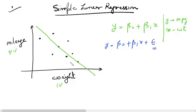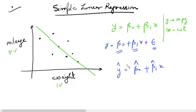Instead of writing the original equation, we also write ŷ = β̂₀ + β̂₁x, where the hat notation represents estimated values. Since we do not know the exact values of β₀ and β₁, we estimate them — β̂₀ is the estimated value of β₀, and β̂₁ is the estimated value of β₁.